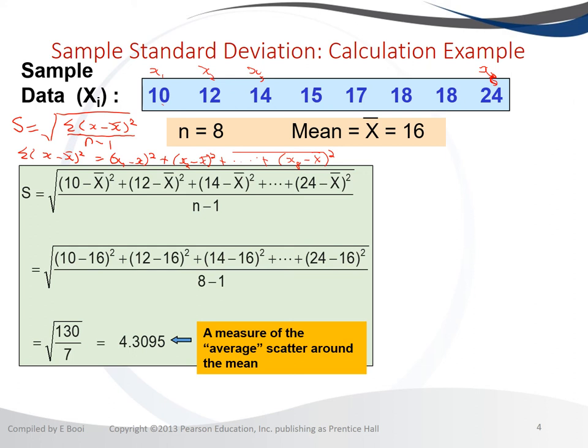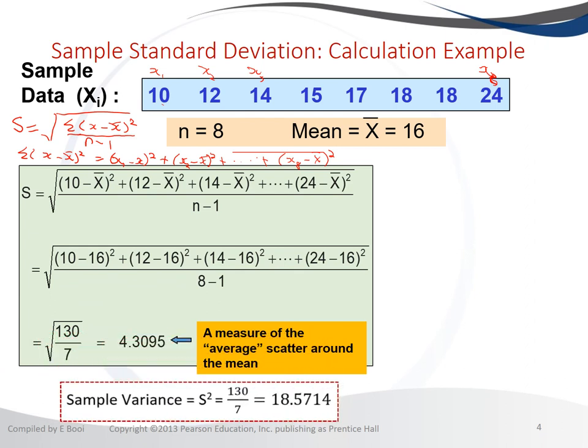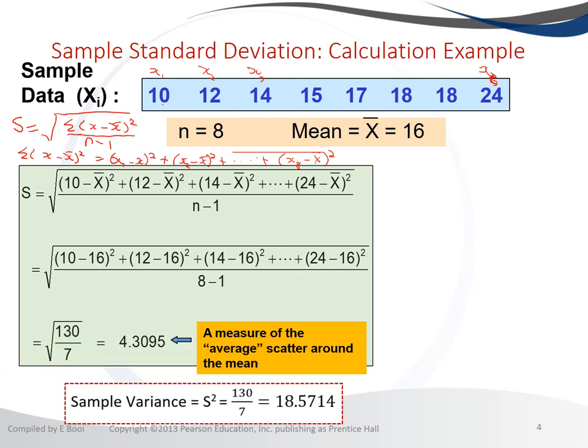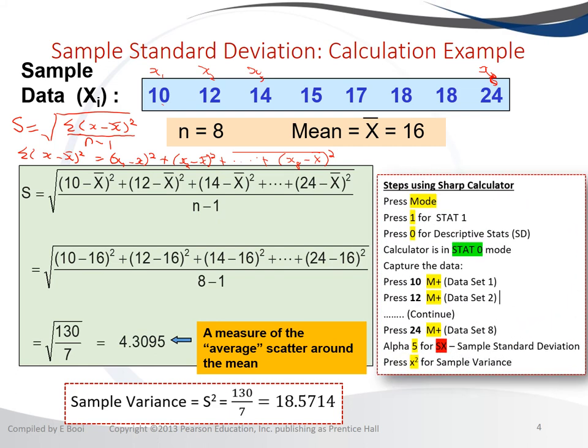Remember, the standard deviation is the square root of the variance, so everything underneath the square root is the variance. We can stop there and say 130 divided by 7 equals 18.57, which is our sample variance. I've also shown on the side how to calculate the standard deviation using a calculator.